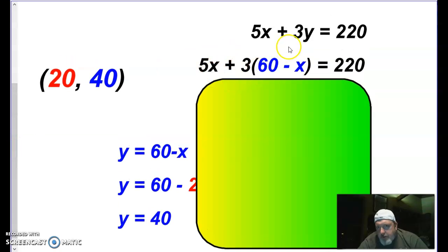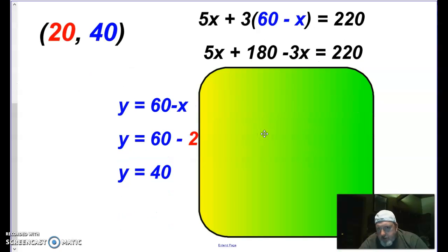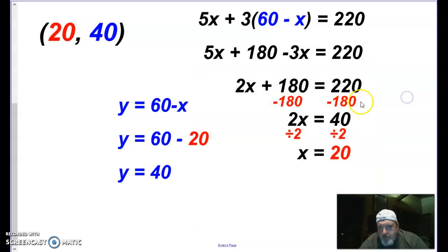And so I plugged in 60 minus X for Y. We're going to go ahead and distribute here. So when I distribute, I get 5X plus 180 minus 3X equals 220. And so when we do that, 5X minus 3X is 2X plus 180. We'll subtract the 180 from both sides. And our last step, we'll divide by 2. And we know that X is 20. So we know we've got 20 large snack packs.